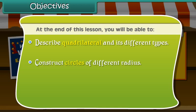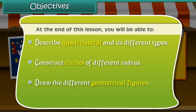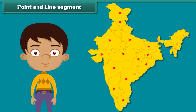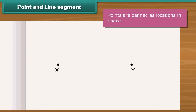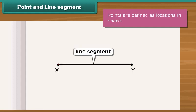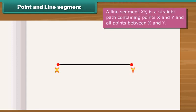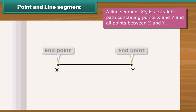Look at this Indian map. We see that the cities are represented by dots. These are called points. In geometry, points are defined as locations in space. They tell about the position of objects. What if the two points are connected? We will get a line segment. A line segment XY is a straight path containing points X and Y and all points between X and Y. The points X and Y are end points.